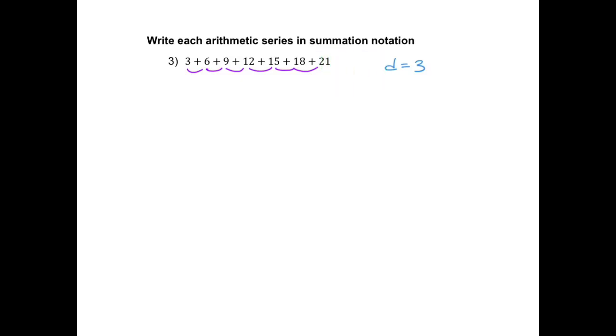So I'm going to substitute that on a_n equals a_1 plus (n minus 1) times d. So I have a_n equals 3 plus (n minus 1) times 3. So when I distribute, I have 3 plus 3n minus 3. So this is 3n.